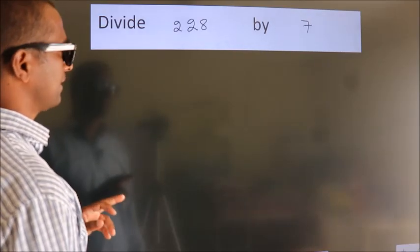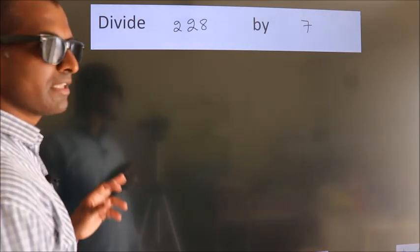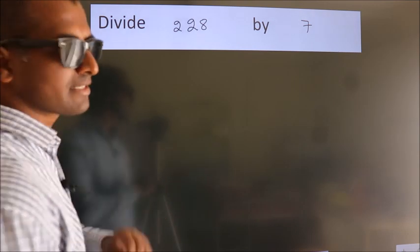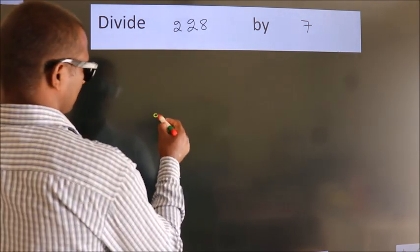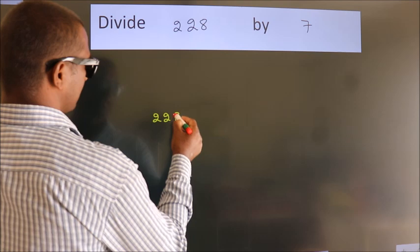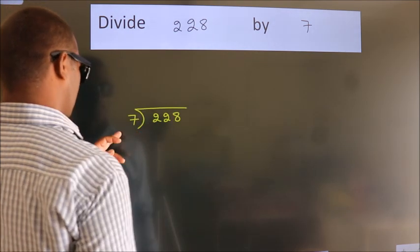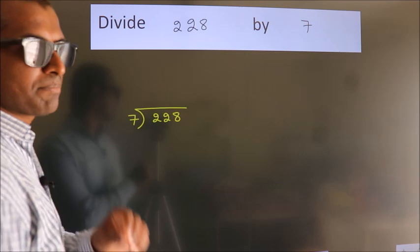Divide 228 by 7. To do this division, we should frame it in this way. 228 here, 7 here. This is your step 1.